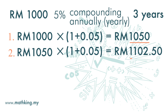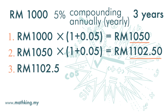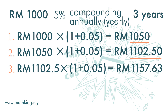And then this RM1,102.50 will become the principal at the beginning of the third year. And by the end of the third year, the money you will get is 1,102.50 times 1.05, and we get RM1,157.63. This amount is also called matured value. This is the calculation of interest compounded annually, or yearly.